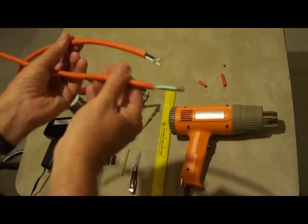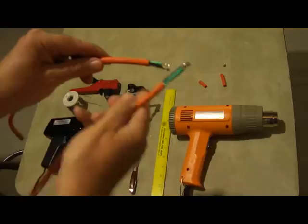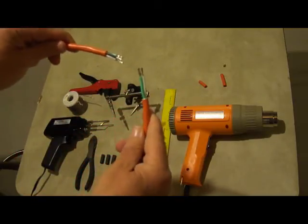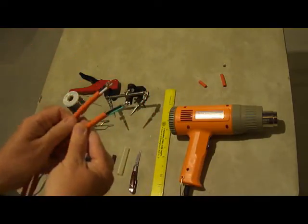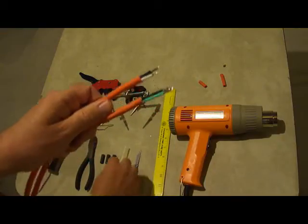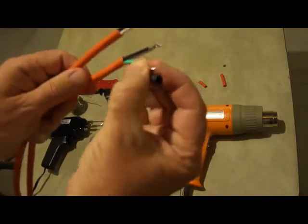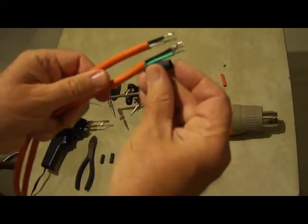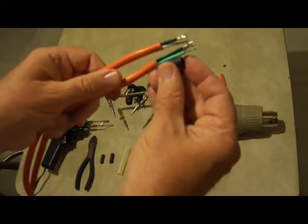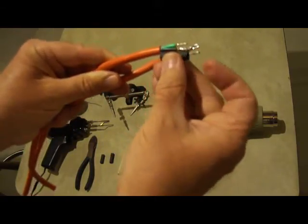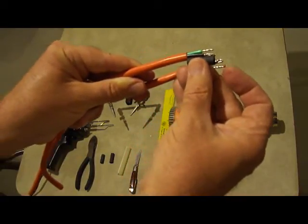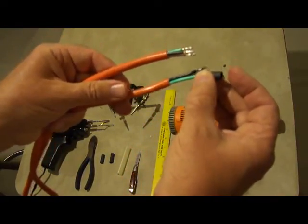The next thing that we need to do is put the heat shrink on at this time, and you put it on the longer end. The reason being, if you put it on the short end, you're going to be covering over the solder joint.